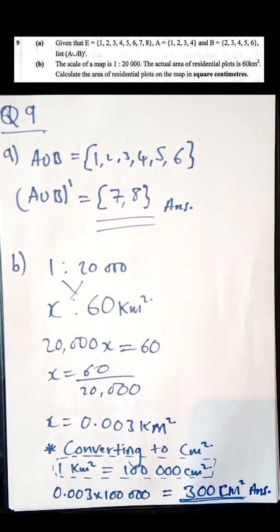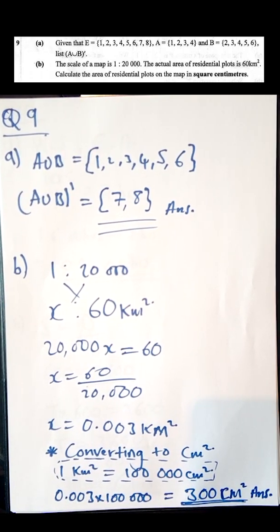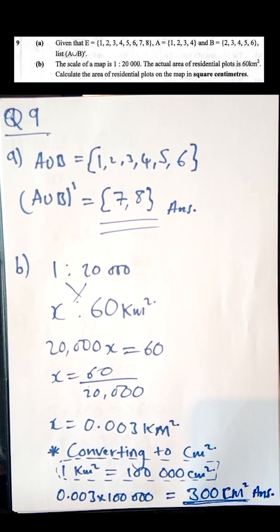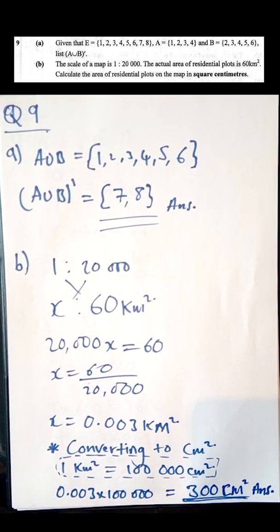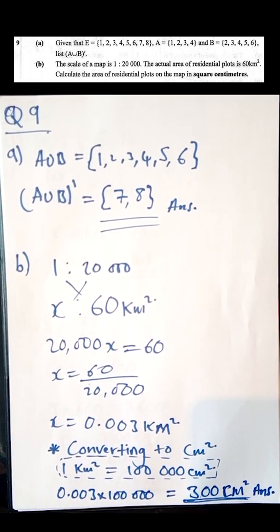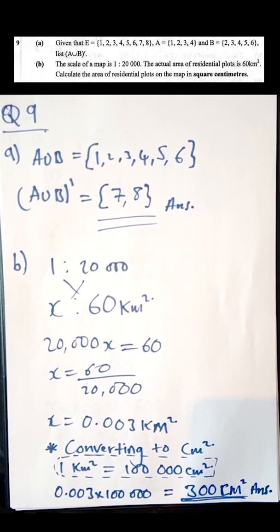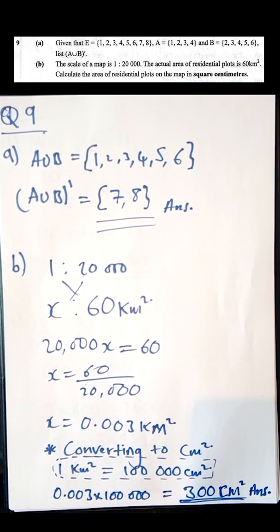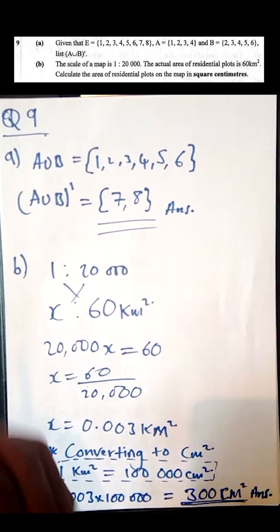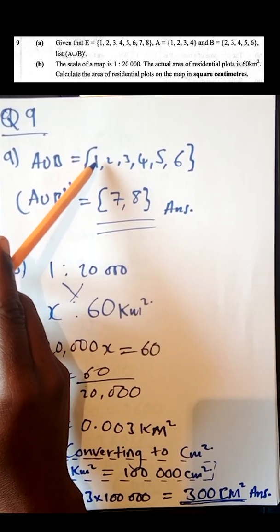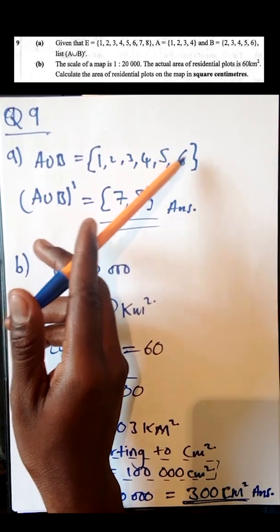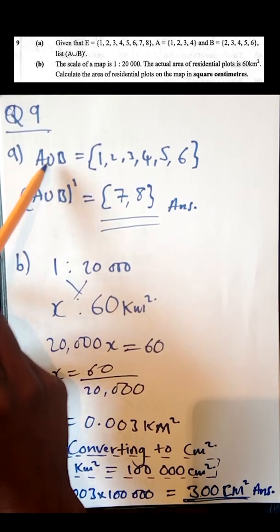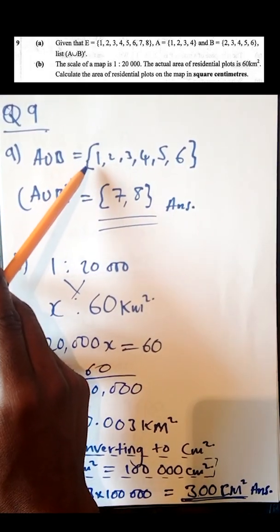(A ∪ B) complement means numbers which are not found in A and B collectively. The first step is to combine A and B. A ∪ B gives the members {1, 2, 3, 4, 5, 6}.